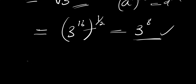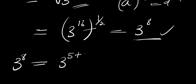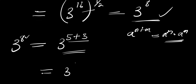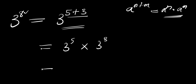Now, what is the value of 3^8? We can write it as 3^(5+3) because 5 plus 3 is 8. Applying the identity a^(n+m) = a^n times a^m, we have 3^5 times 3^3. The value of 3^5 is 243, since it means 3 into 5 places. And 3^3 is 27. So we have 243 times 27.